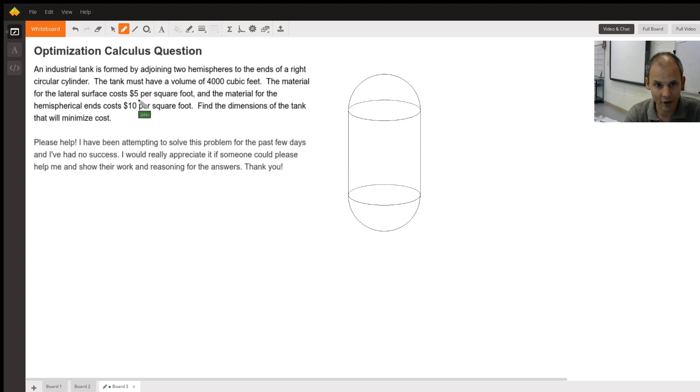The material costs $5 per square foot for the lateral surface, the sides, the circular part, the cylinder part of it, and then for the hemisphere part, it's $10 per square foot, and we're wanting the dimensions of the tank that will minimize cost.